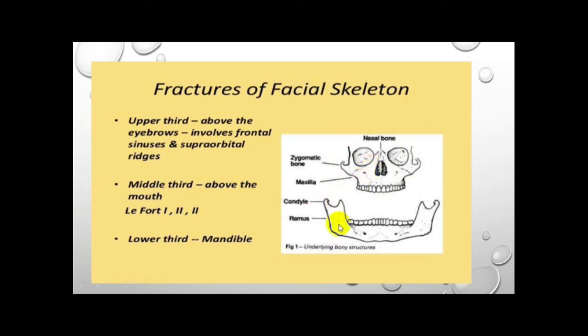The lower third — if there is any trauma — we call it a lower third fracture. This includes the body, ramus, and angle of the mandible. If it involves the alveolar process, we call it an alveolar fracture.